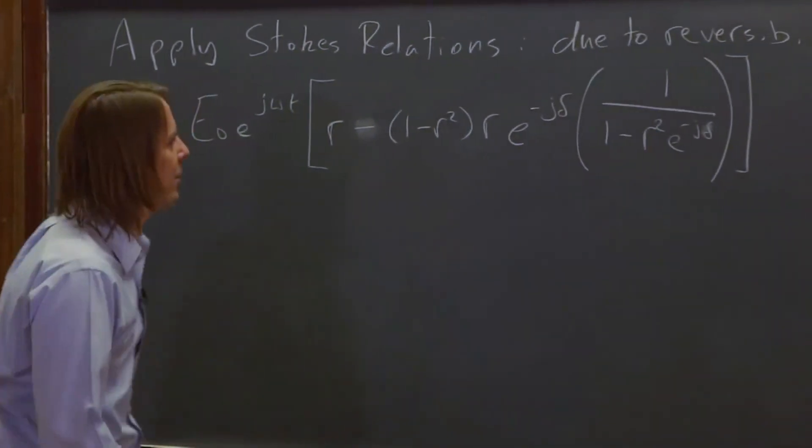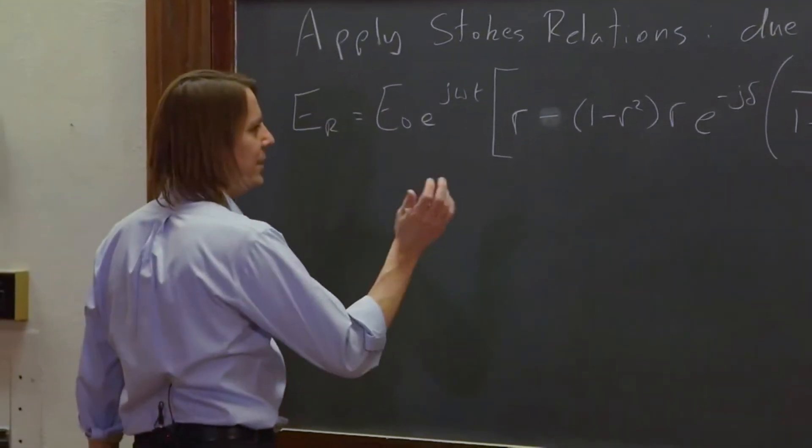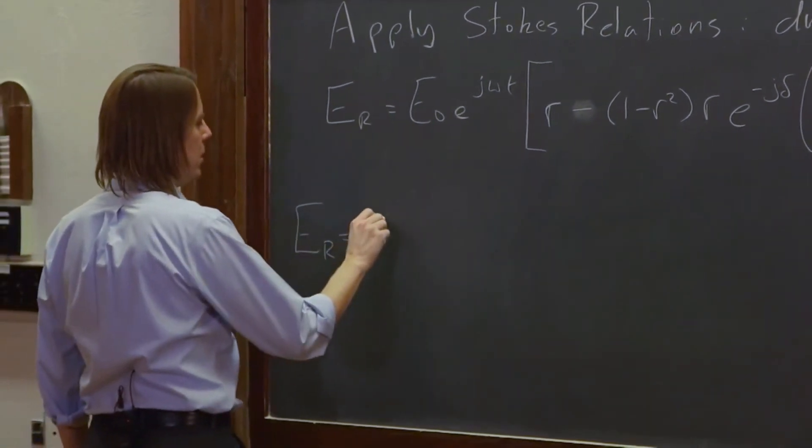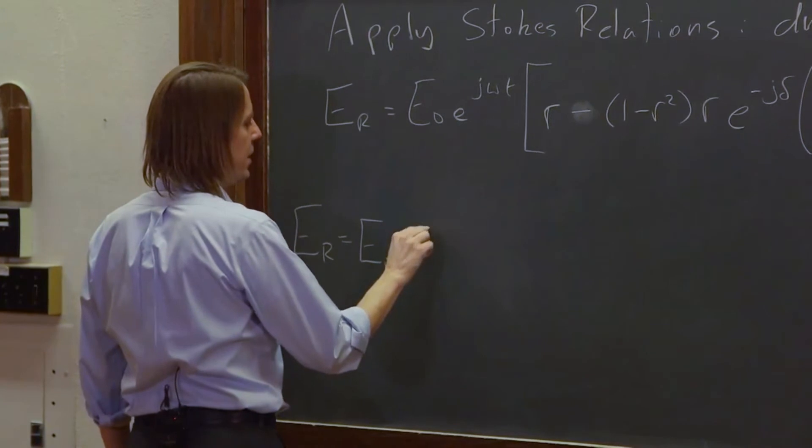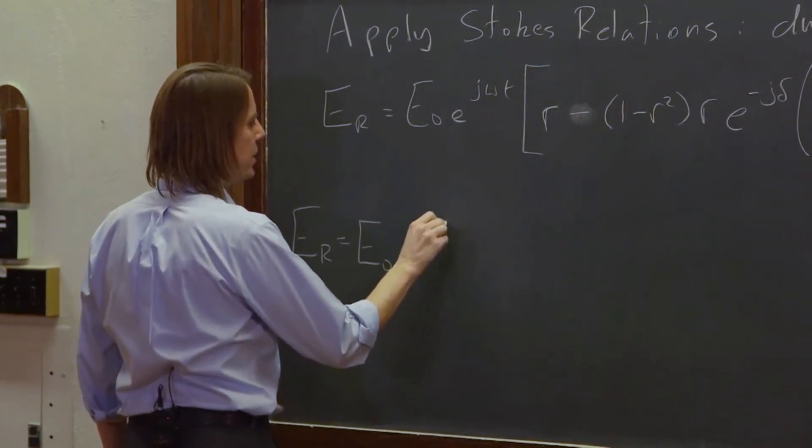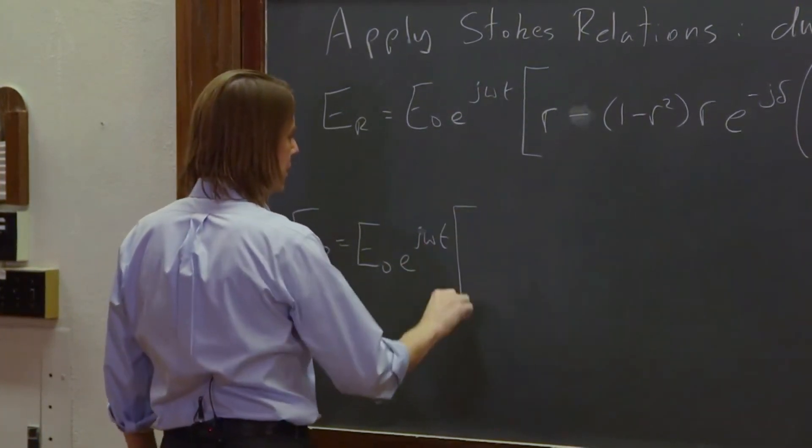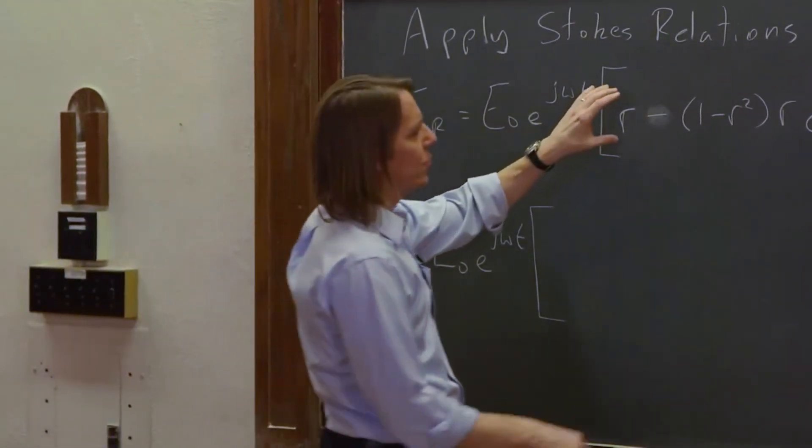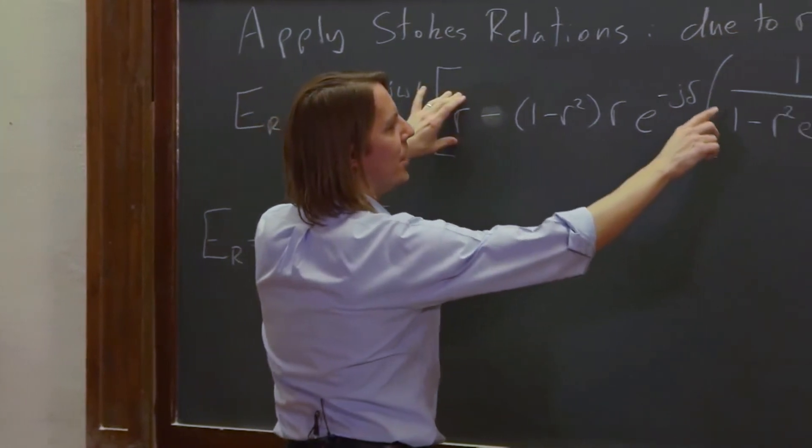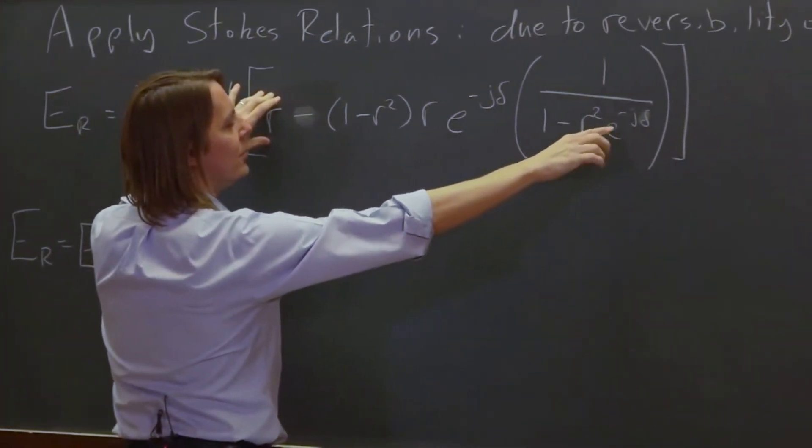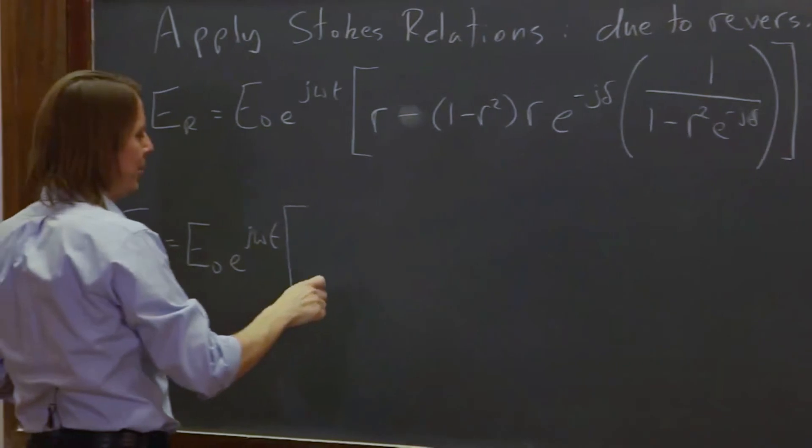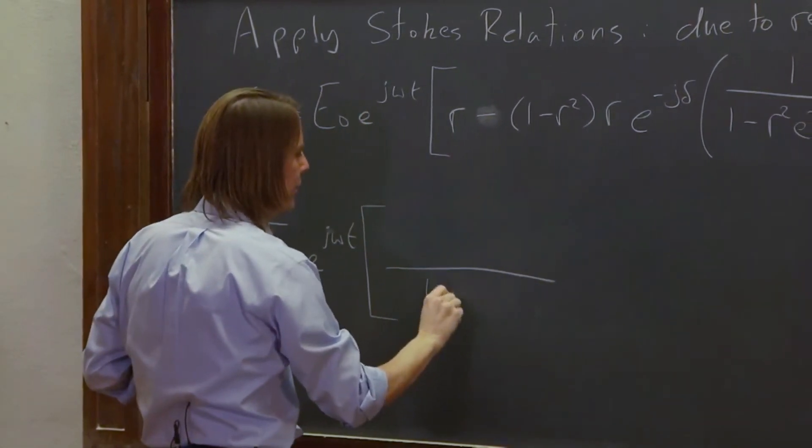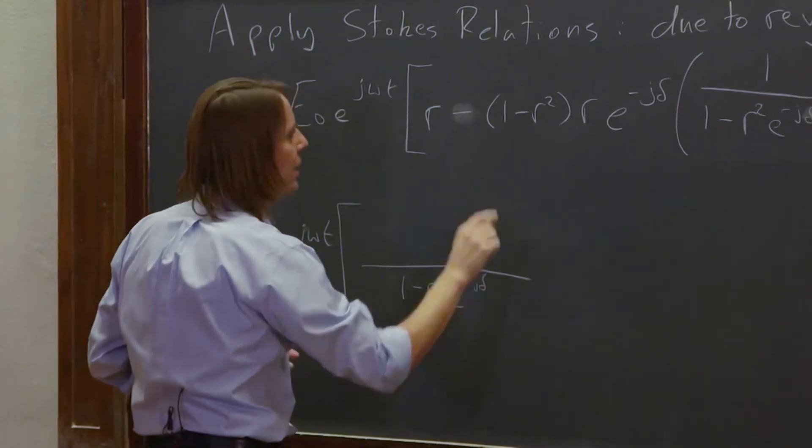Now we have to simplify it, which basically means expanding this whole mess out. So e r is e not e to the j. You're thinking, surely he doesn't mean he's going to foil that. And yes, we are. This term is by itself, so we just have to multiply it by 1 minus r squared e to the minus j delta over 1 minus r squared to the minus j delta. We've got to get a common denominator, right? So let's get our common denominator down here. 1 minus r squared e to the minus j delta.